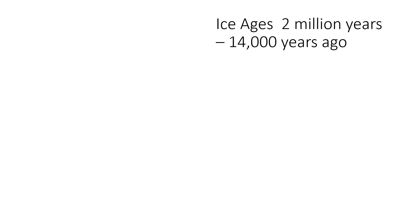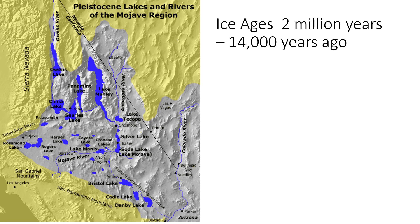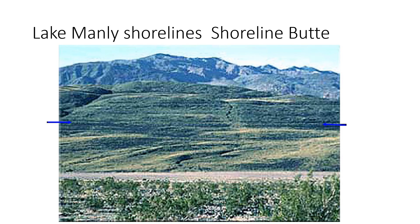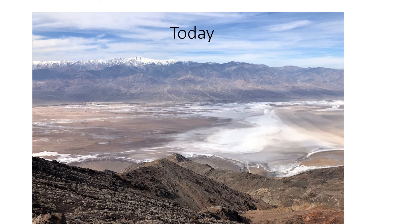During the Pleistocene, or the Ice Ages, there was copious rain in the area, filling all of the basins with water. The largest of the lakes was Lake Manly, in today's Death Valley. We can find evidence of old shorelines of Lake Manly at Shoreline Butte, which was once an island in the middle of the lake. Finally, the last of the ice retreated from the mountains and the lakes dried up, leaving Death Valley the deepest, driest, and hottest place in North America.